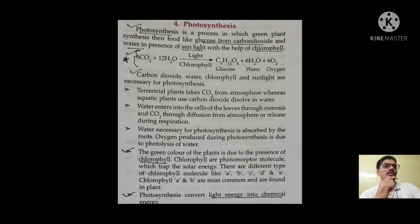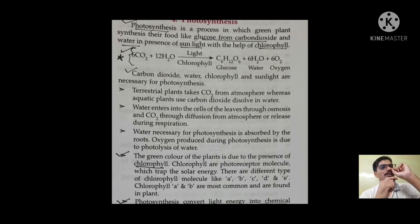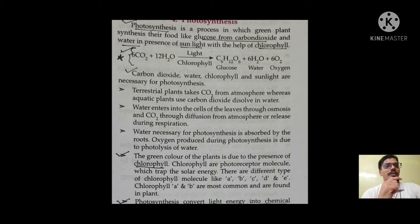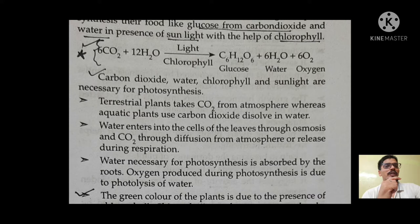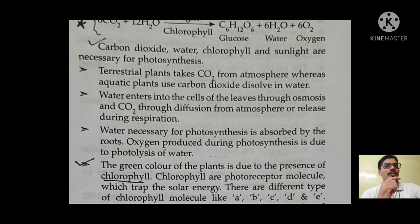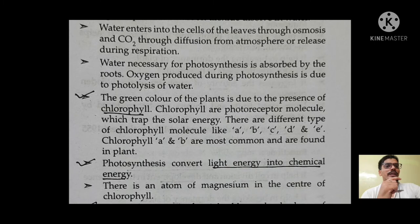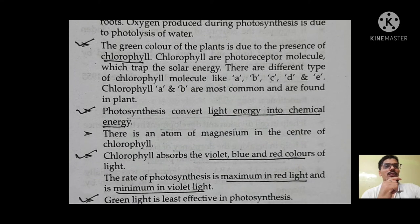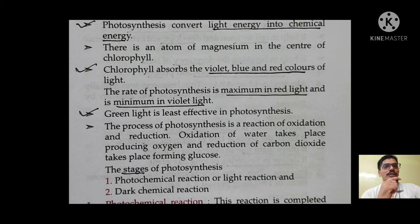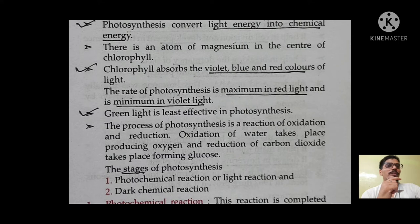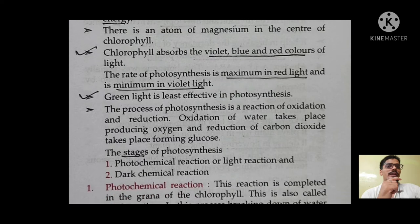Next topic is photosynthesis. Photosynthesis is a process where green plants synthesize food like glucose from carbon dioxide and water in the presence of sunlight with the help of chlorophyll. The equation to remember: 6CO₂ + 12H₂O in the presence of light and chlorophyll gives glucose + water + oxygen. Carbon dioxide, water, chlorophyll, and sunlight are necessary for photosynthesis. The green color of the plant is due to chlorophyll, which is the photoreceptor molecule. Photosynthesis converts light energy into chemical energy. Chlorophyll absorbs violet, blue, and red colors of light. Rate of photosynthesis is maximum in red light and minimum in violet light. Green light is the least effective in photosynthesis.